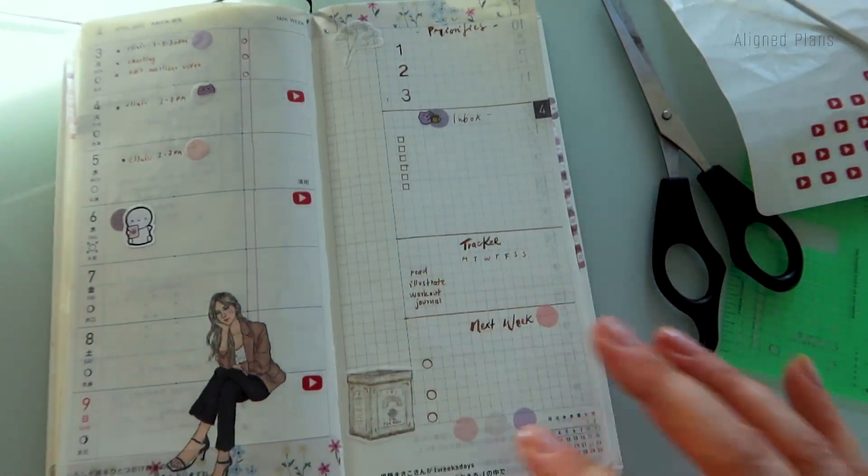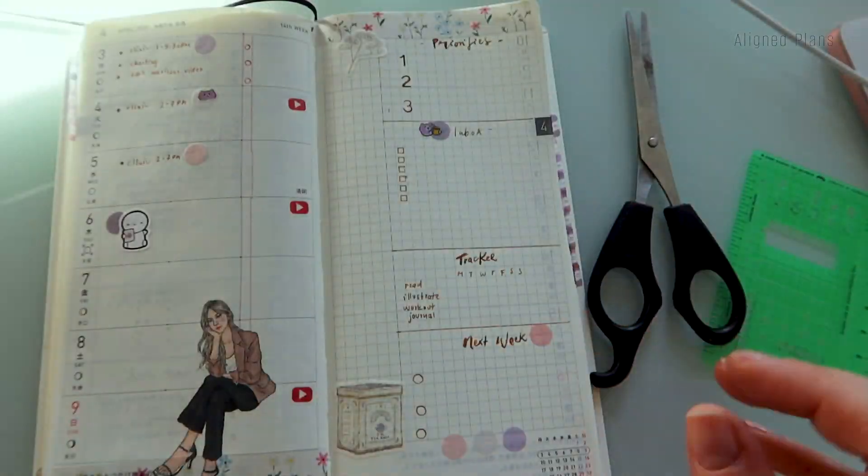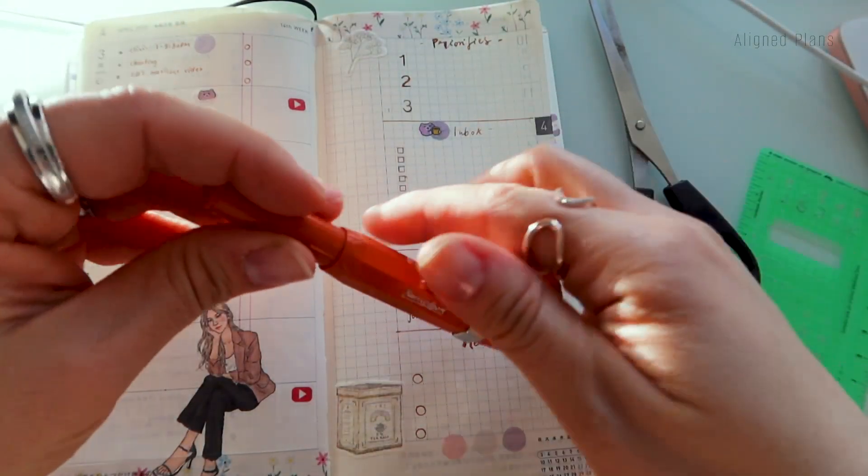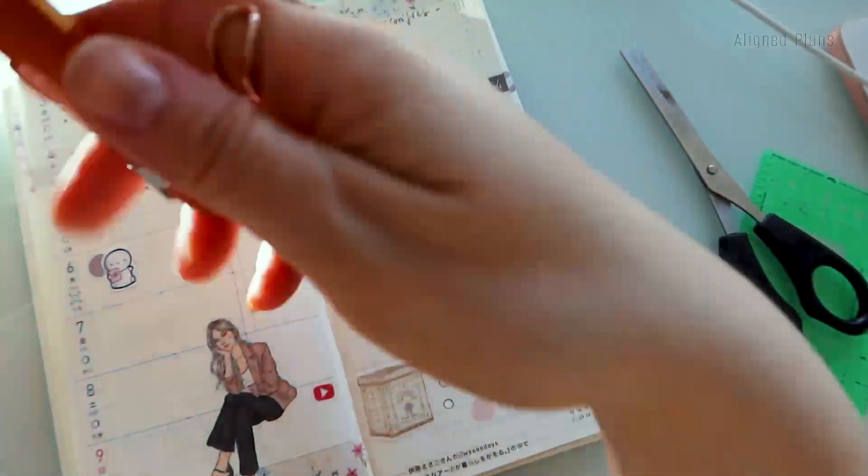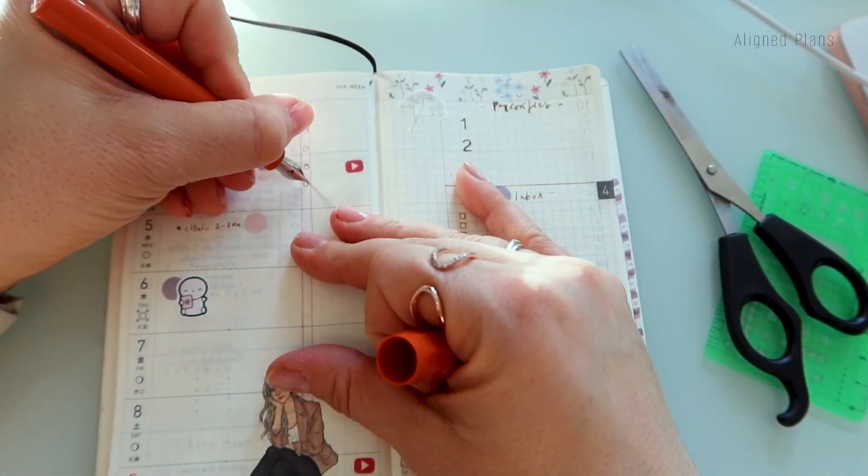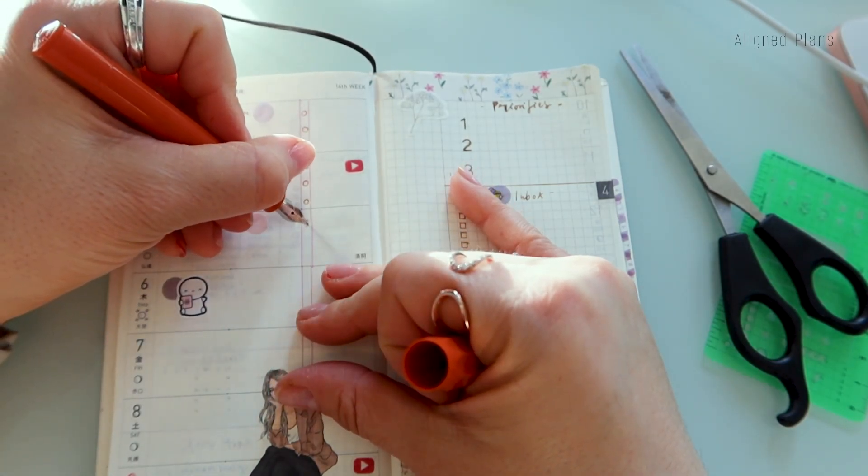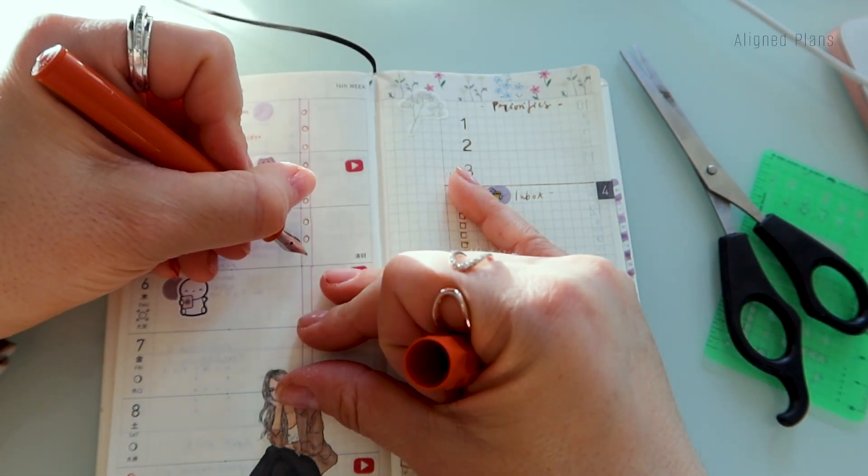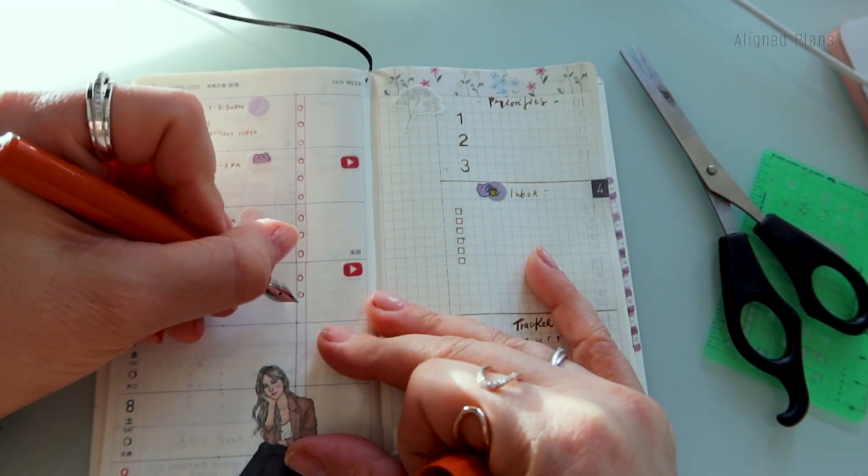If you get a chance to pick these up, I would highly recommend it. These ones are like these purple little dogs. They're super, super cute. But look how minimal it looks. It was originally intended for a monthly spread that you can use in your traveler's notebook, but I end up using it here quite often in my Hobo Weeks.